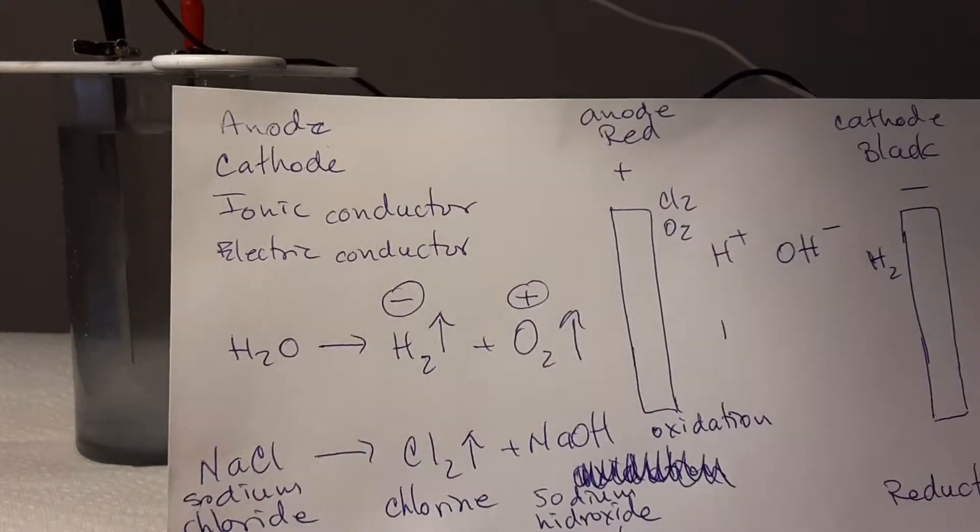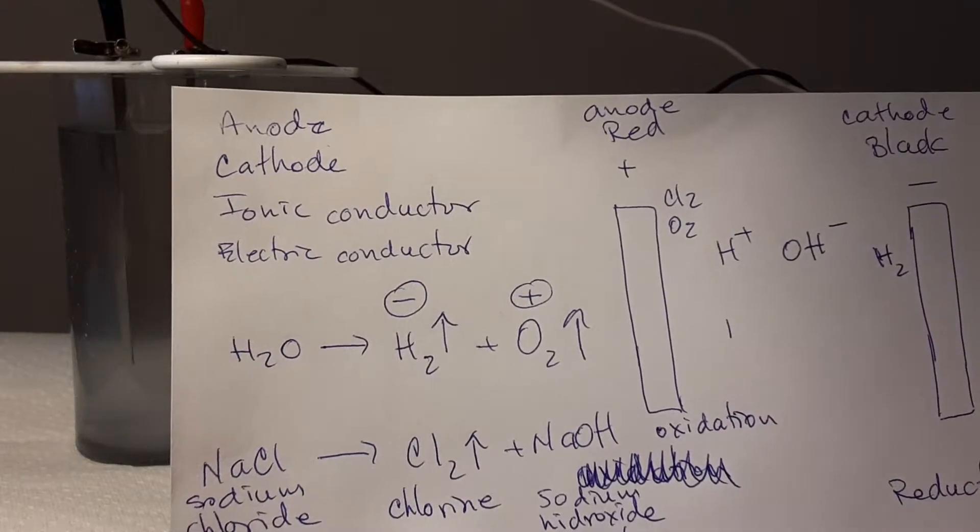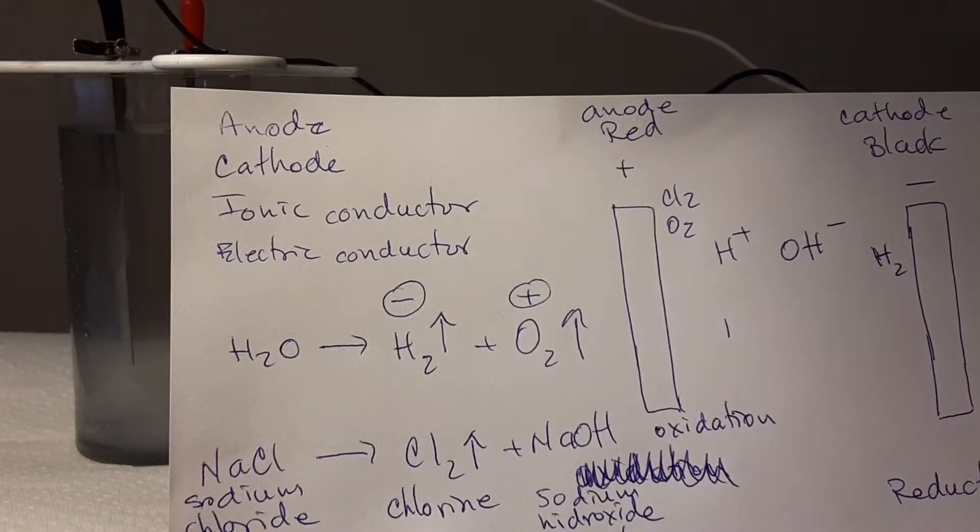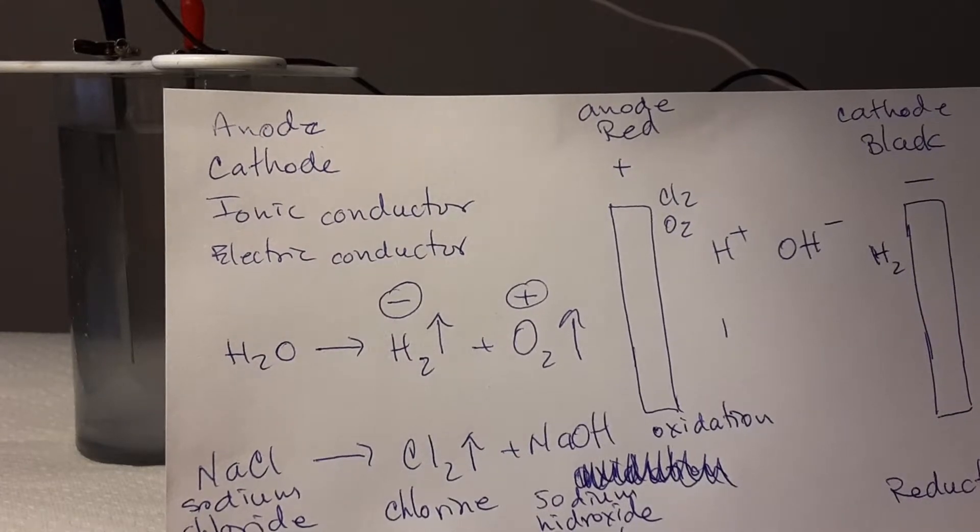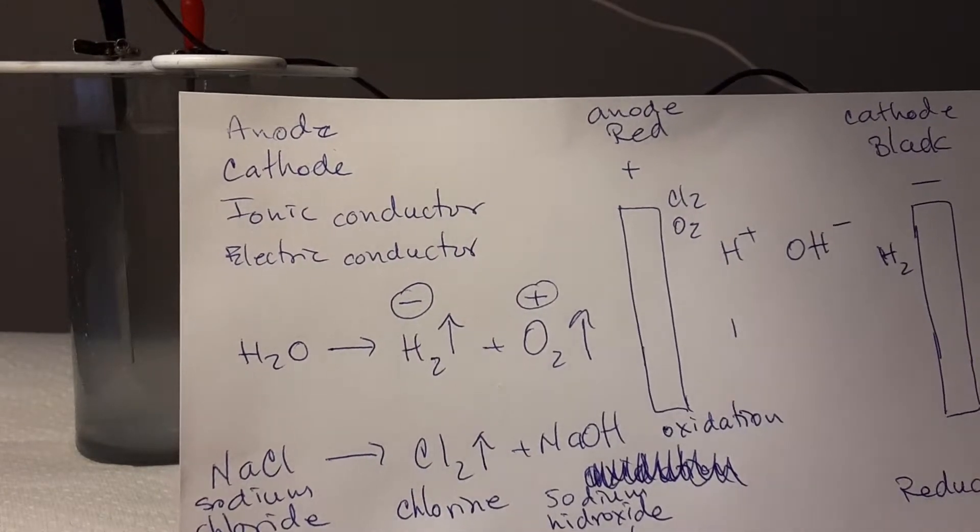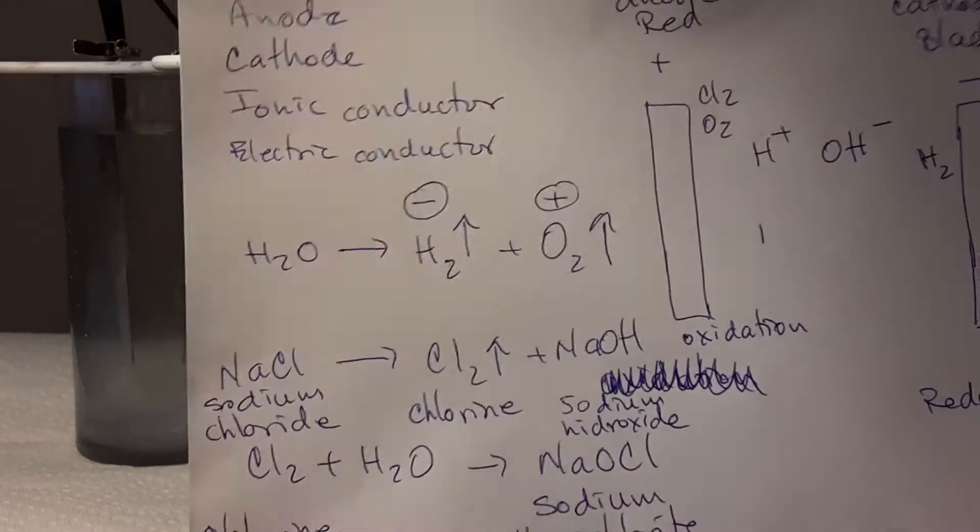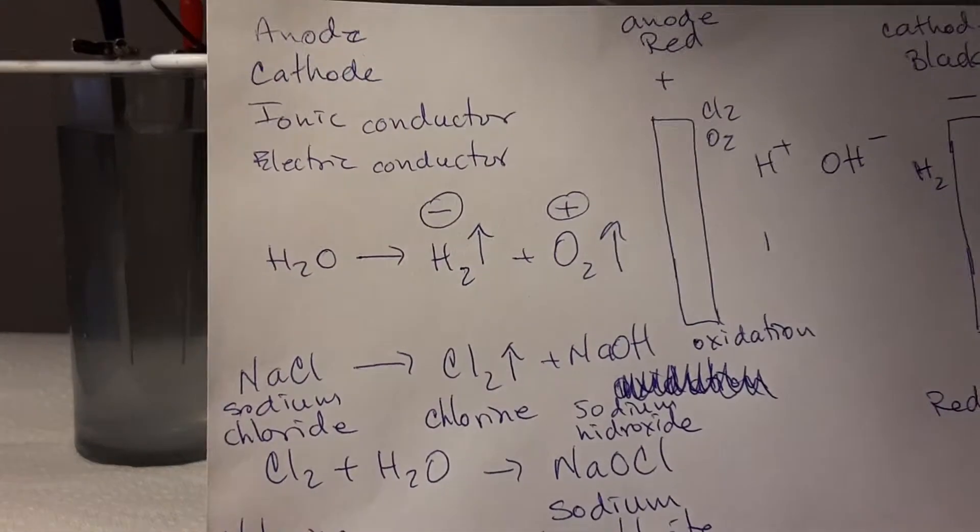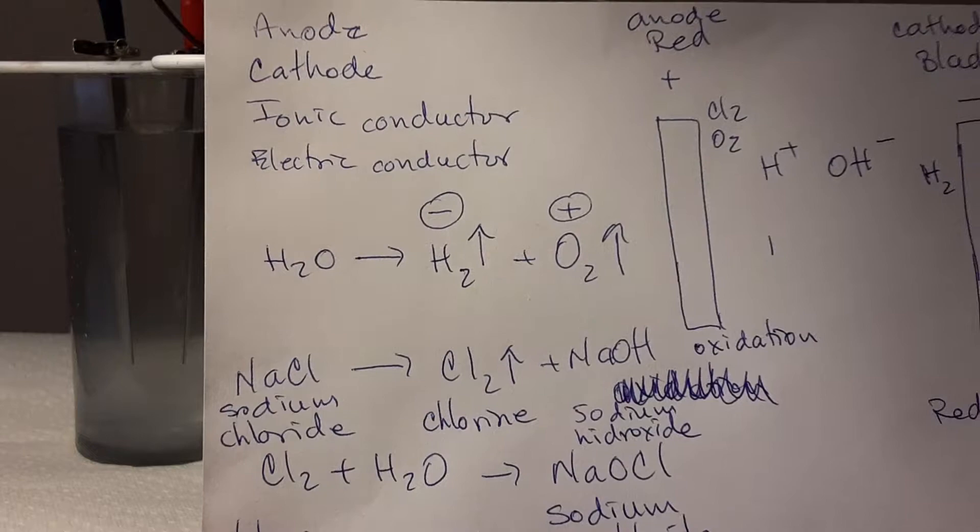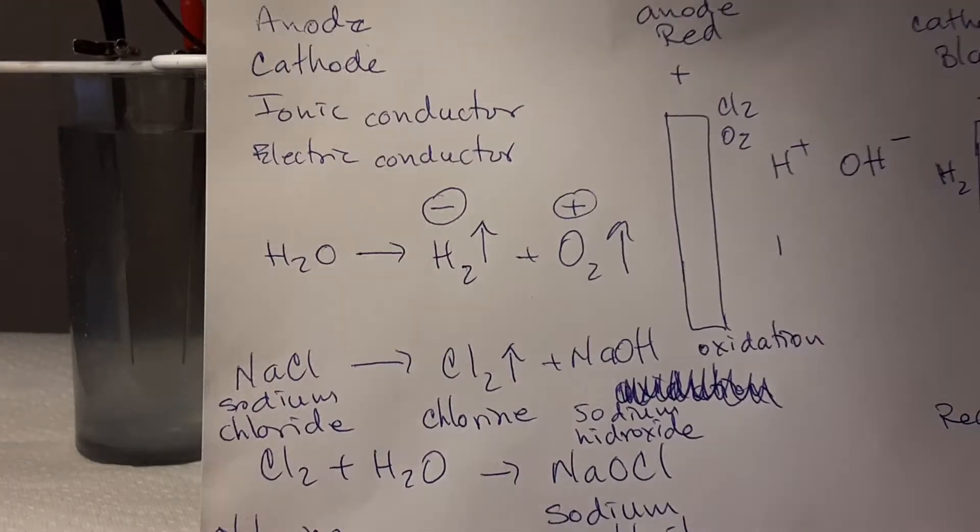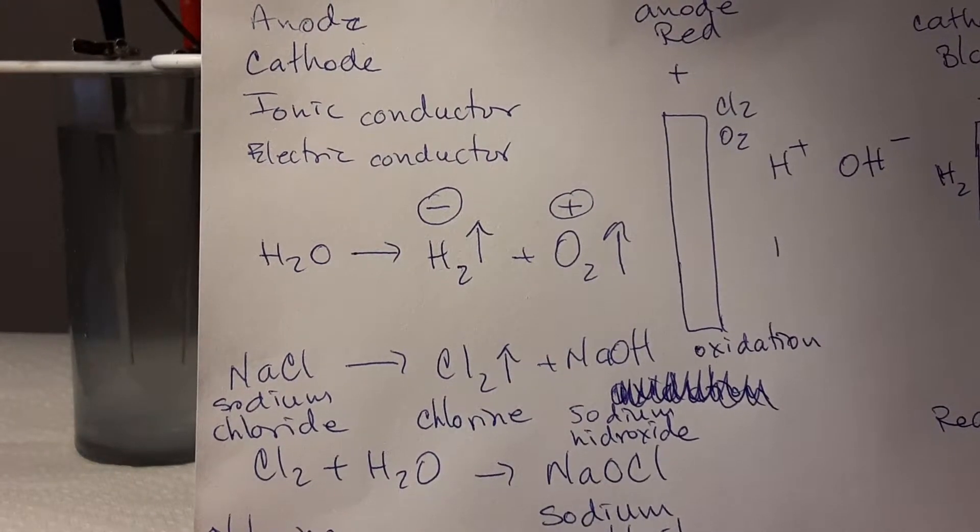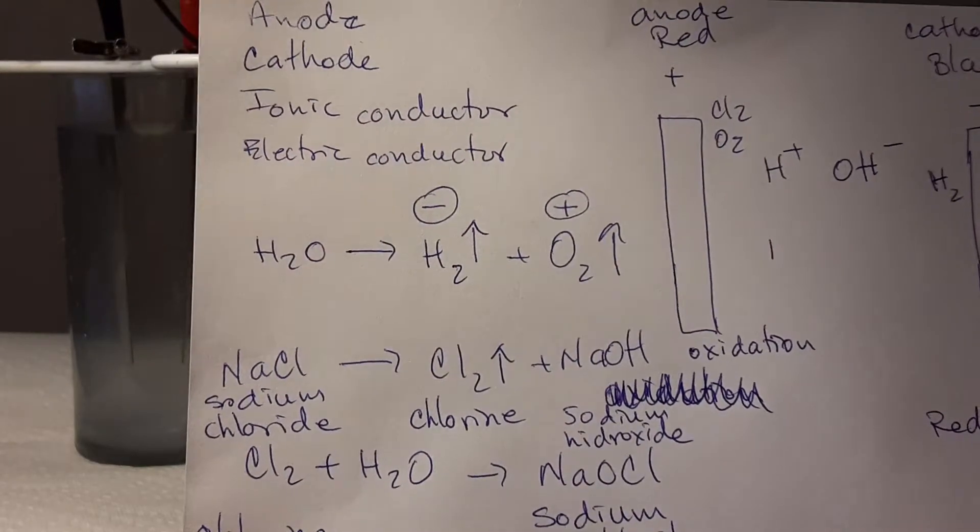We can see in a few seconds how the water will be split into gases - hydrogen on the cathodic side and oxygen on the anodic side. Since we have sodium chloride inside the water, we will obtain chlorine gas on the surface of the anode.